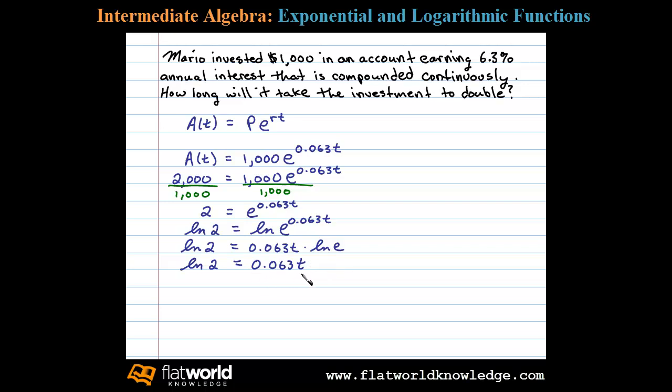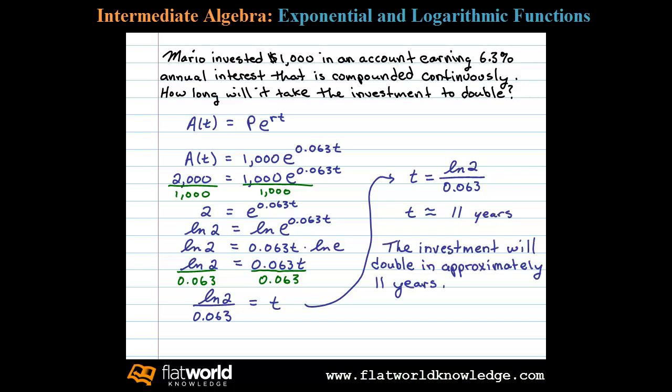And then all that's left to do is to divide both sides by 0.063. And that leaves us with the exact answer: the natural log of 2 divided by 0.063 equals t. Now working that on a calculator, that comes out to approximately 11 years, and so we can say that the investment will double in approximately 11 years.